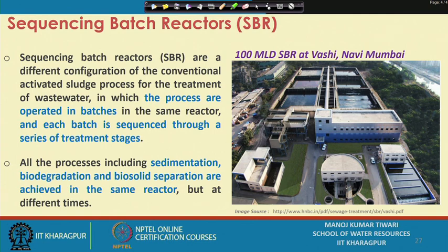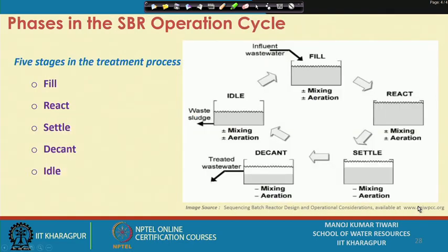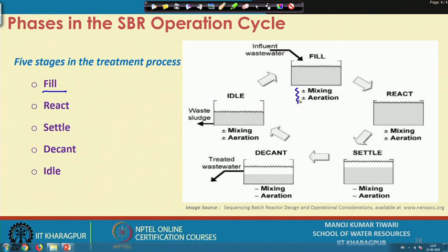All processes — including sedimentation, biodegradation, and biosolid separation — are achieved in the same reactor, but at different stages and at different times. There are five different stages in a typical SBR operation cycle. The first stage is filling, where the influent comes into the batch tank. This filling can be with or without mixing and with or without aeration — the roles of mixing and aeration have different attributes in the filling system.